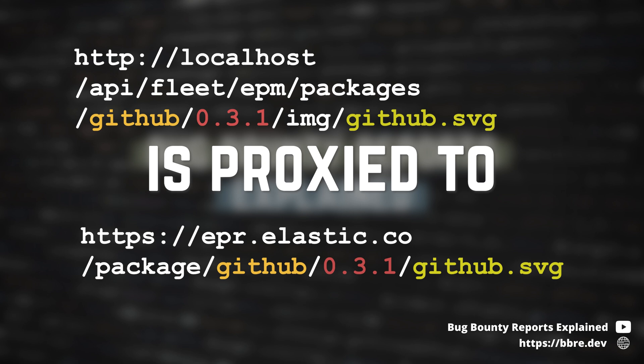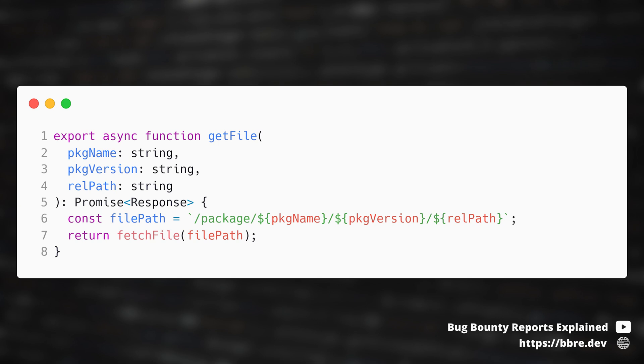Here is another example I found by looking for similar code patterns. This is a functionality that allows you to browse external packages on Kibana, and those files are stored on another server — the Elastic Package Registry. The path is created to make a request to EPR, but there is no URL encoding, so there is a path traversal. However, the Elastic Package Registry is public anyway, so there is no impact. If you could find an open redirect on the package registry it would be an SSRF, but I looked through the whole source code and didn't find one.